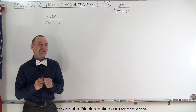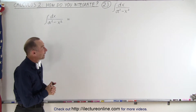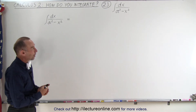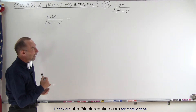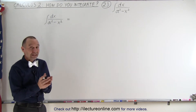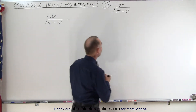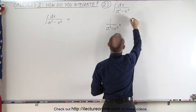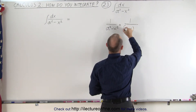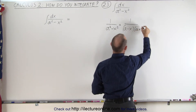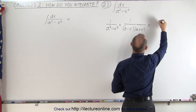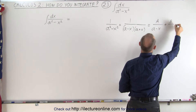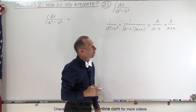Welcome to our lecture online. We made a very small change from the previous example: here in the denominator we have a squared minus x squared instead of a squared plus x squared. If we think about 1 over a squared minus x squared, we can write that as 1 over (a minus x)(a plus x), which means this can be written as the sum of two fractions: A over (a minus x) plus B over (a plus x). This is the technique of partial fractions.